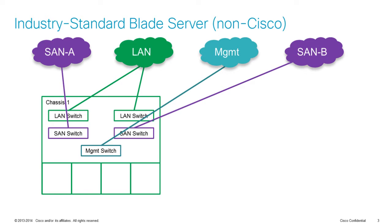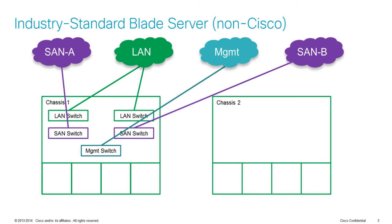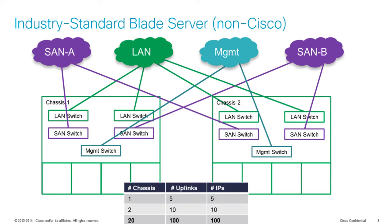If you're using rack mounts, that would probably be five connections per rack mount as well. So you can see that with each added rack mount or chassis, the complexity of cabling increases significantly. What also increases is the number of IP addresses that you have to assign and manage.